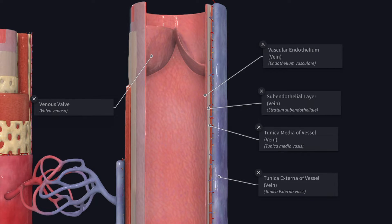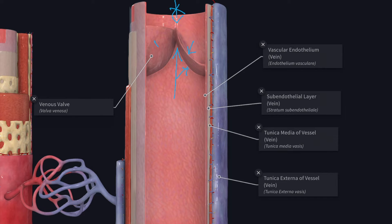Next, we will see about the valves of the veins. Most veins contain valves that allow the flow of blood towards the heart, but prevent flow in the opposite direction, that is regurgitation. Typically each valve is made up of two semilunar cusps — this is one semilunar cusp and this is the other. Each cusp is a fold of endothelium within which there is some connective tissue that is rich in elastic fibers.